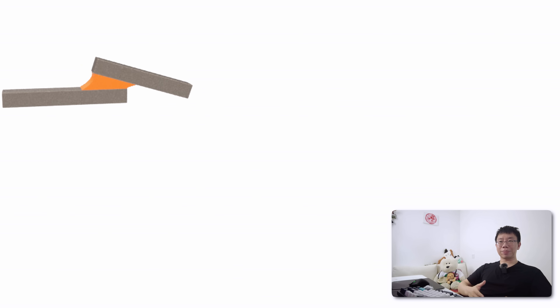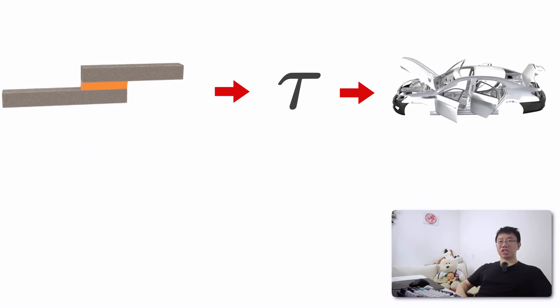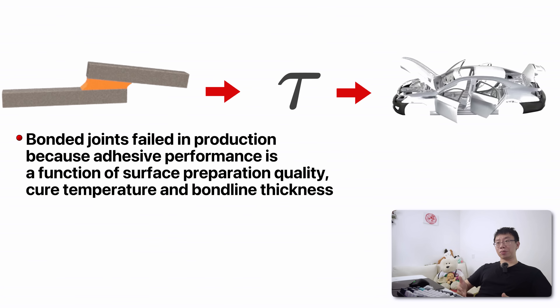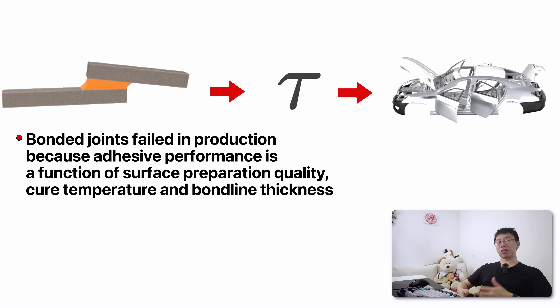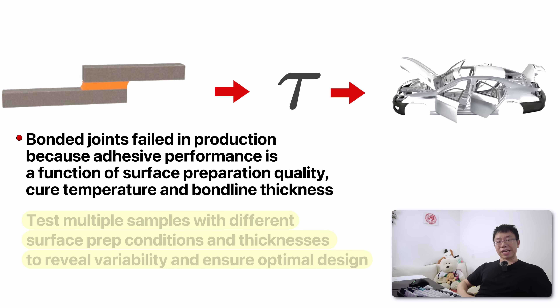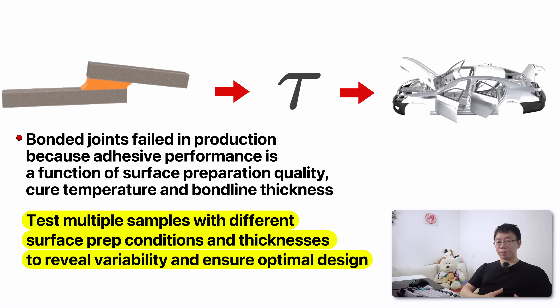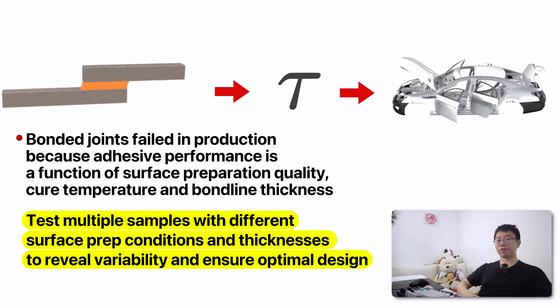Another example is an engineer who tested one adhesive-bonded aluminum sample and used its shear strength value in their design. In production, several bonded joints then failed because adhesive performance varies depending on surface preparation quality, cure temperature, and bond line thickness. Testing multiple samples with different surface prep conditions and thicknesses would have revealed the variability and ensured optimal joint design.